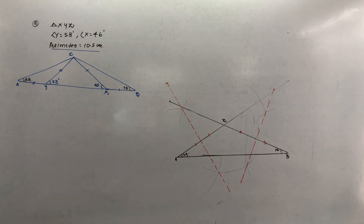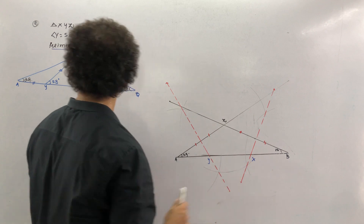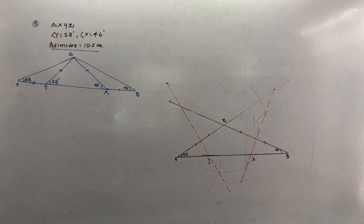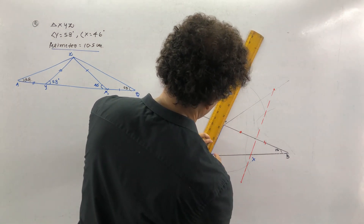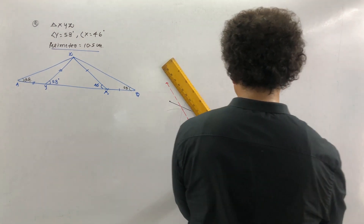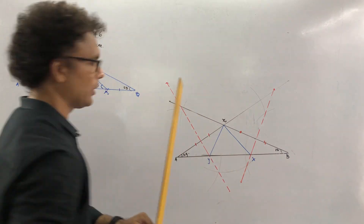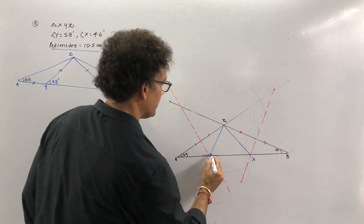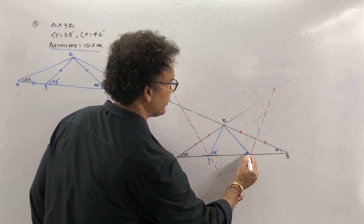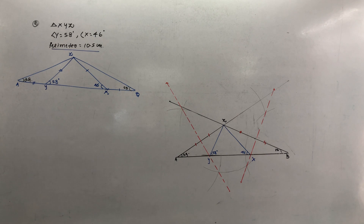The bisectors meet at two points. Write one meeting point as Y and the other as X. Take your scale and join those points. This is your required triangle XYZ. Put the markings: this angle is 58° and this angle is 46°. This is how you do sum number 2 from exercise 4.3.